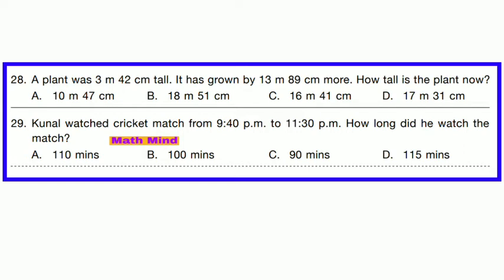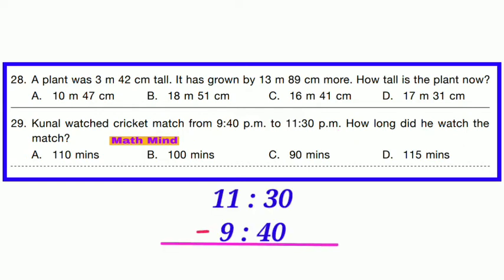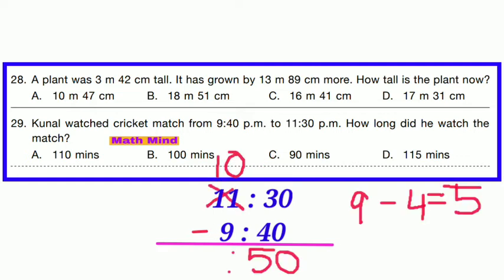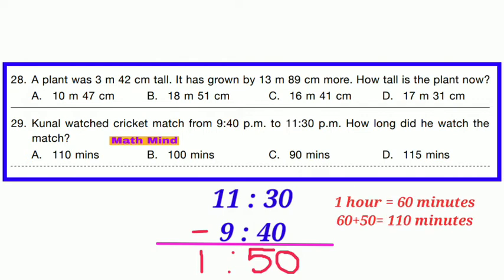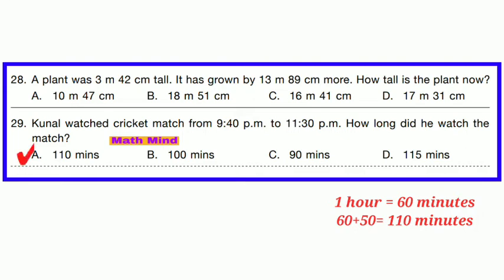Question No. 29: Kunal watched a cricket match from 9:40 PM to 11:30 PM. How long did he watch? Subtracting 9:40 from 11:30, we borrow to get 1 hour 50 minutes. 1 hour = 60 minutes, so 60 + 50 = 110 minutes. He watched the match for 110 minutes.